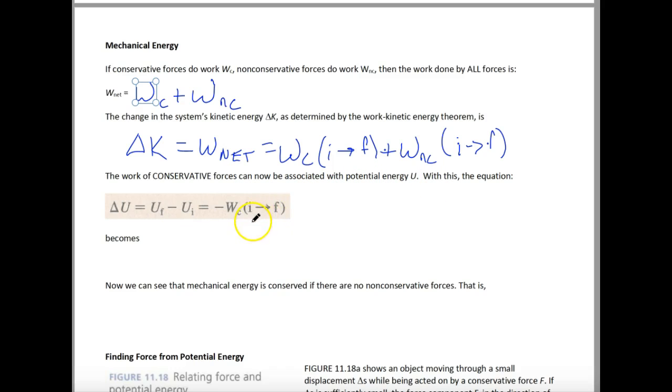The work that a conservative force does can be associated with potential energy. With this, the equation we have here becomes delta K plus delta U is equal to the change in that mechanical energy, and that's equal to the work done by a non-conservative force. We can see that mechanical energy is conserved if there are no non-conservative forces. Basically, your delta E mech, your total mechanical energy, is equal to zero if and only if our work due to non-conservative forces like friction and heat is also equal to zero. Otherwise, we're going to lose or sometimes gain energy.